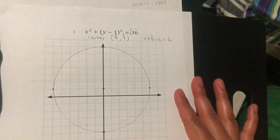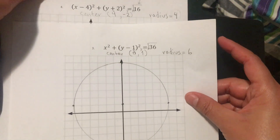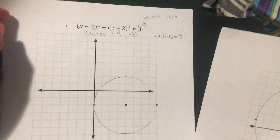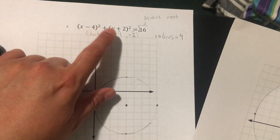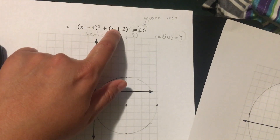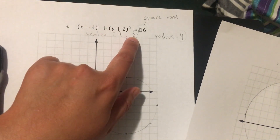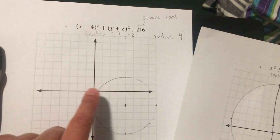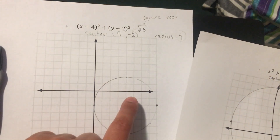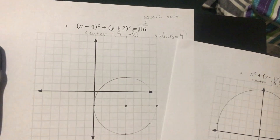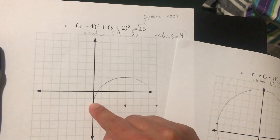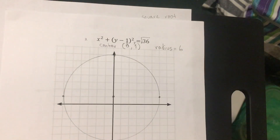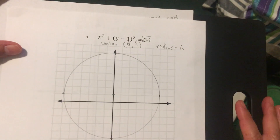For exercise four we already did it: subtracting 4 gives x = positive 4, adding 2 gives y = negative 2. The center is (4, -2) and the radius is 4 — the square root of 16. Count 4 in each direction from the center and form your circle. That's it for today — you can now work on 10.1!